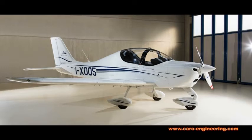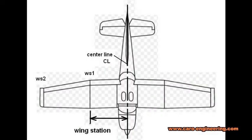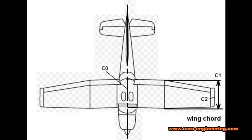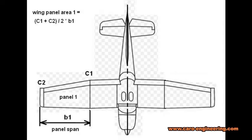I want to introduce the definitions used to calculate a few things. A wing station is the distance from the airplane center line to a point outboard on the wing. Wing station 1 is where the rectangular part of the wing ends; wing station 2 is at the wing tip. The wing chord is the distance from the leading edge to the trailing edge of the airfoil. The wing chord C1 at wing station 1 is the same as C0, the chord at the center line. The easiest case for calculating wing area is a rectangular wing, where the chord is constant and chord times wingspan equals wing area. If sections of the wing are tapered, we calculate the area for each panel separately, using the mean chord times the panel span.